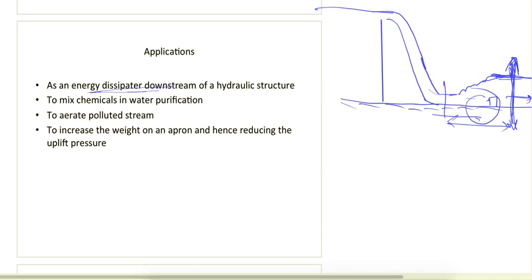There are several applications of hydraulic jump. First, as an energy dissipator: if a structure gives water very high energy due to its height, we want to dissipate that energy by ensuring a hydraulic jump forms. Second, to mix chemicals in a water purification system: the high turbulence and eddies associated with hydraulic jump allow chemicals to be mixed thoroughly, making it useful in water treatment processes.